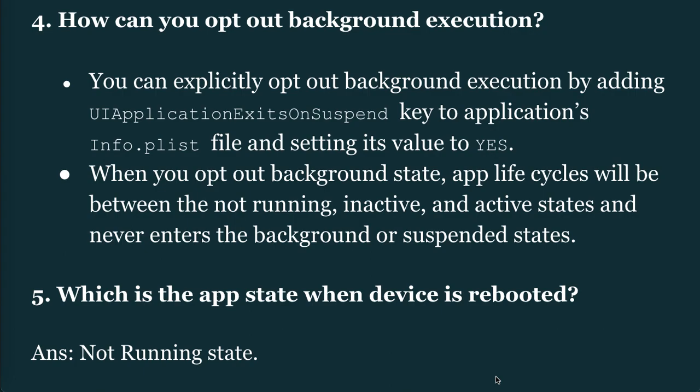Next question: How can you opt out of background execution? You can explicitly opt out by adding the UIApplicationExitsOnSuspend key to the application's Info.plist file and setting its value to YES. When you opt out of background state, the app life cycle will be between the not running, inactive, and active states, and will never enter the background or suspended states.